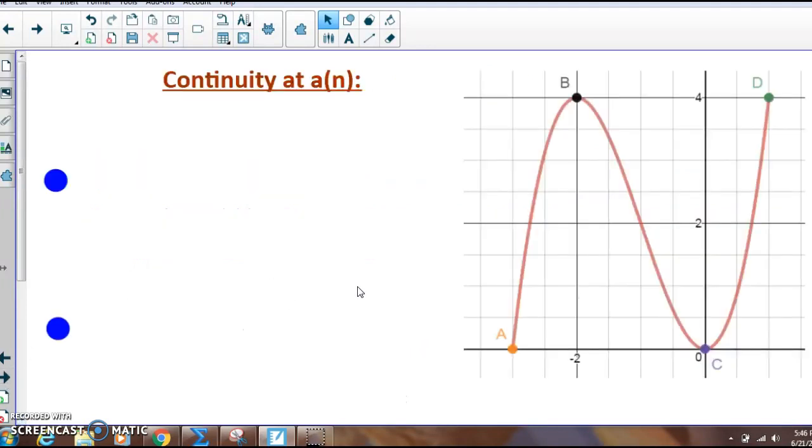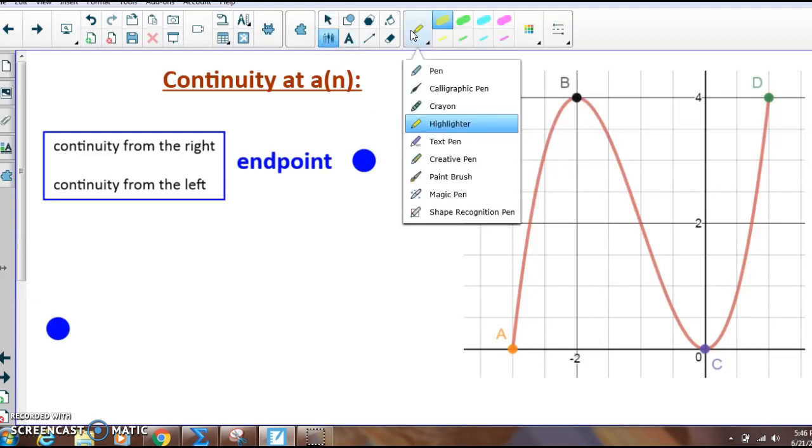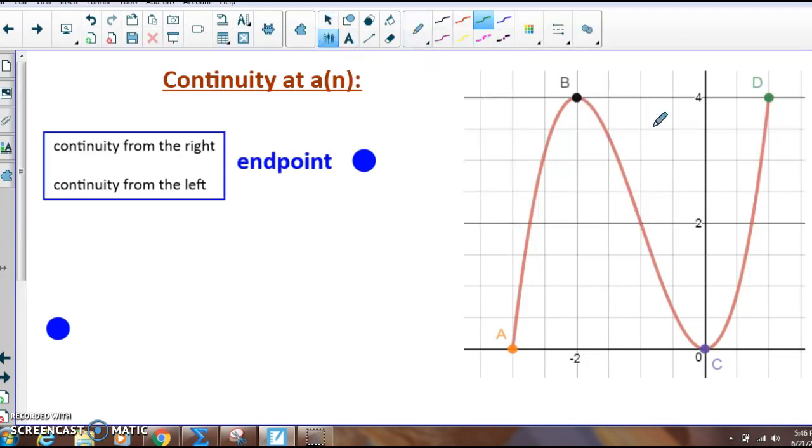Okay, so we're going to start off by learning about two different types of continuity. The first one is continuity at an endpoint. This is the one that's a little bit harder to understand. A function is considered to be continuous at an endpoint if it's continuous from the right side or if it's continuous from the left side. So for instance, let me grab my pen here.